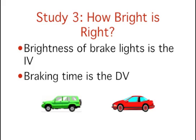The dependent variable is the variable that measures the effects of the independent variable — in this case, time to hit the brakes. So the experimenter manipulated the brightness of brake lights and measured the effect on driver stopping time.